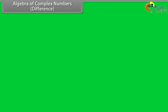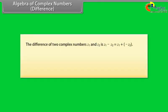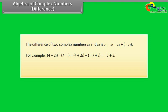Algebra of complex numbers — Difference. The difference of two complex numbers Z1 and Z2 is: Z1 minus Z2 equals Z1 plus (minus Z2). For example, (4 plus 2 iota) minus (7 minus iota) equals (4 plus 2 iota) plus (minus 7 plus iota) equals minus 3 plus 3 iota. Similarly, (6 minus iota) minus (4 plus 2 iota) equals (6 minus iota) plus (minus 4 minus 2 iota) equals 2 minus 3 iota.